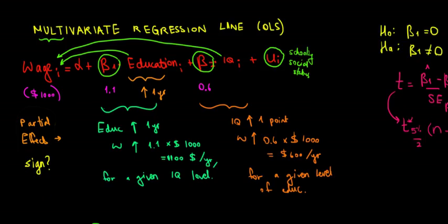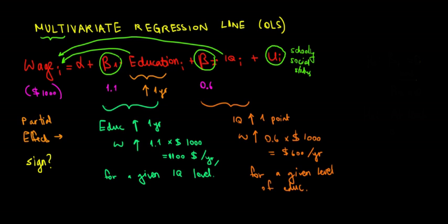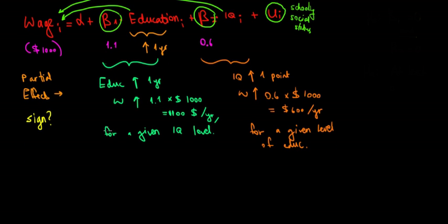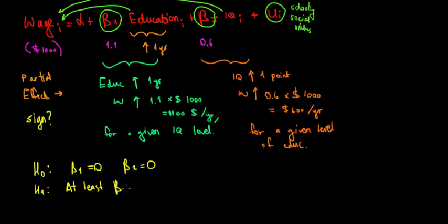Now let's introduce the concept of joint effect. The joint effect means we want to see whether neither education nor IQ affects wage, or at least one of them has an effect on wage. The null hypothesis is that the coefficient of education is zero and the coefficient of IQ is zero. The alternative is that at least one beta must be different from zero.